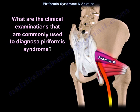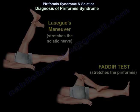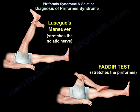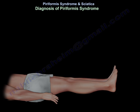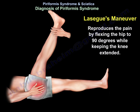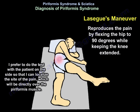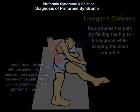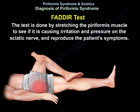The clinical examinations commonly used to diagnose piriformis syndrome include the Lasègue maneuver and the FAIR test. The Lasègue maneuver stretches the sciatic nerve, and the FAIR test stretches the piriformis muscle. The Lasègue maneuver reproduces the pain by flexing the hip to 90 degrees while keeping the knee extended. I prefer to do the test with the patient on the side so I can localize the site of the pain, which will be directly over the piriformis muscle. The FAIR test is done by stretching the piriformis muscle to see if it is causing irritation and pressure on the sciatic nerve and reproduce the patient's symptoms.